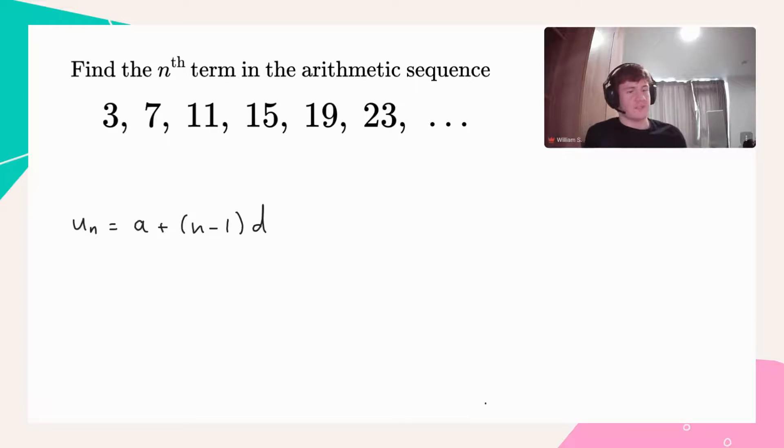So if we want the expression for the nth term, we've got to find these two things. Clearly, the first term here is 3, so a is just 3. Then looking at the difference between our terms, we see the difference of 7 and 3 is 4, the difference of 11 and 7 is 4, and so on.